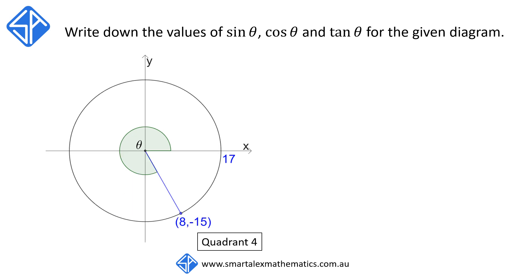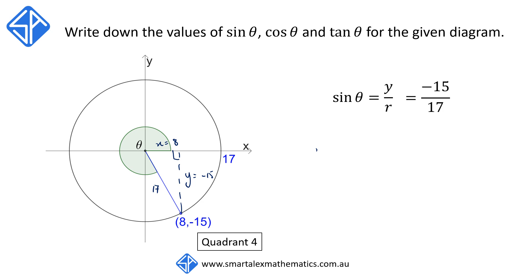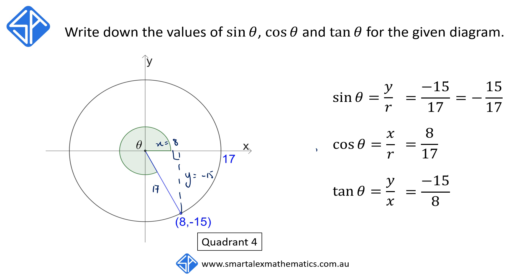Our last example: theta is in quadrant 4. The radius is 17, and the point corresponding to theta is (8, negative 15). We construct a right angle triangle where this side corresponds to y equals negative 15, and this side corresponds to x equals 8. The hypotenuse is 17. Sine theta equals y over r, giving negative 15 over 17. Cos theta equals x over r, giving 8 over 17. And tan theta equals y over x, giving negative 15 over 8. In quadrant 4, only cos is positive, while sine and tan are negative.